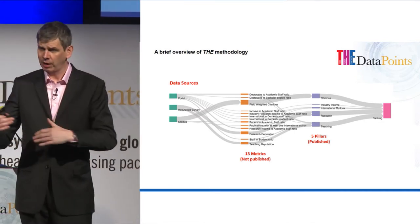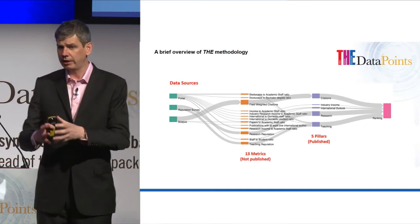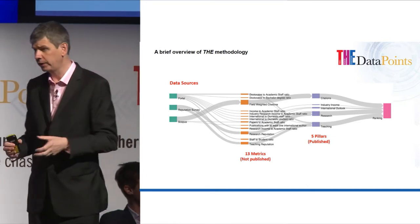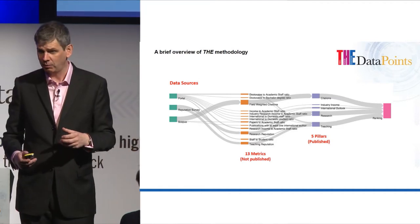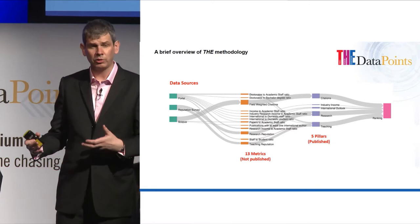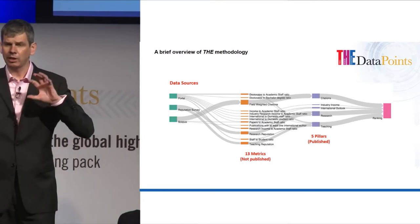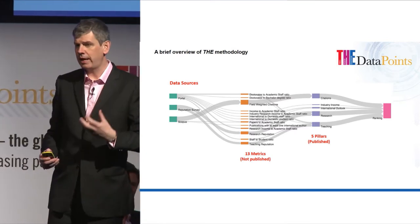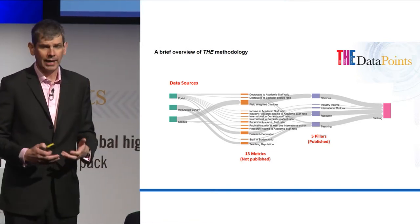This is called a Sankey diagram and it shows the flow of data, in this case from our three data sources. Those data sources are information we gather from universities themselves. We're in a very lucky position here in the UK that because of HESA, you provide your data once to HESA and we're able to take it from there. In other parts of the world it is not nearly as simple — we have to go out to universities and ask them to provide data and spend a lot of time ensuring it's telling us what we think it should. We also have an academic reputation survey, which goes out every January, and we believe it is the strongest and most robust reputation survey of academics across the world.